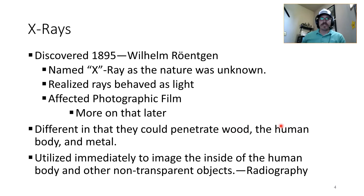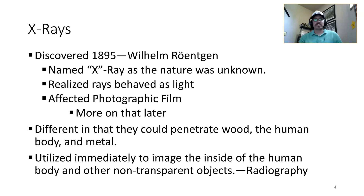X-rays were discovered in 1895 by Wilhelm Röntgen. They were named x-ray because their nature was unknown. Röntgen realized these rays behaved like light — in Germany, all x-radiation is called Röntgen radiation. He realized they affected photographic film and could penetrate wood, which visible light cannot. He also figured out they could penetrate the human body and metal.